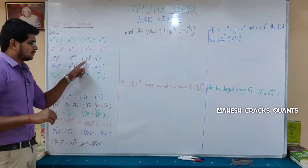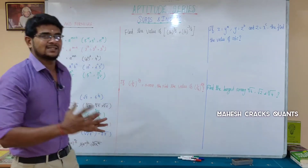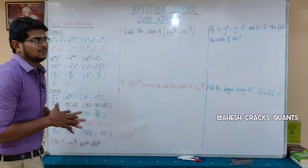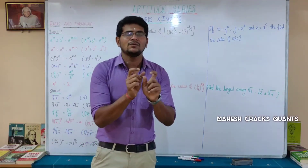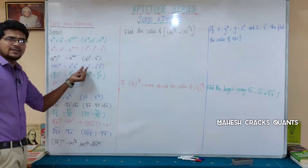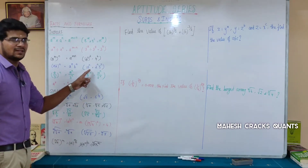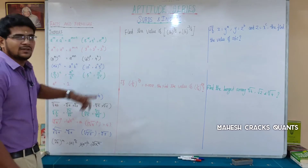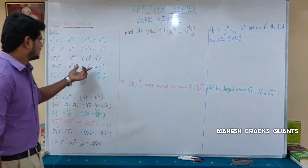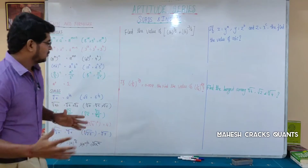If we have a power m whole power n, then we can multiply the powers. So we add the powers: a power m. For example, 4 cube whole power square becomes 4 power 6. Also, if we have a product a times b to the power n, we can split it as a power n into b power n. For example, 10 power n equals 2 power n into 5 power n. Similarly, 12 power n equals some product of power n values.